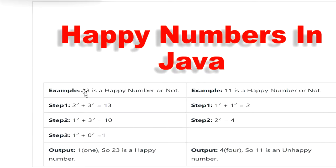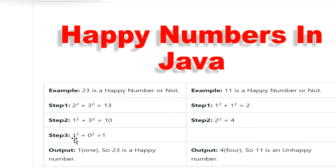For example, we have the number 23. We find the square of each digit — the square of 2 is 4 and the square of 3 is 9 — then 4 plus 9 is 13. We repeat the same step: square of 1 plus square of 3 gives us 10. Continuing, square of 1 is 1 and square of 0 is 0, so we get 1. Since we reached 1, we can say 23 is a happy number. If we had reached 4, it would be an unhappy number.